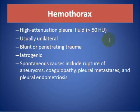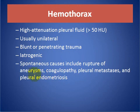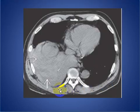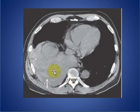Hemothorax shows high attenuation pleural fluid, more than 50 HU, usually unilateral, with a history of trauma or iatrogenic cause. Spontaneous causes include ruptured aneurysm, coagulopathy, pleural metastasis, and pleural endometriosis. Here we see a non-contrast CT scan with heterogeneous and high attenuation pleural collection and pleural thickening in this patient.